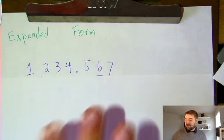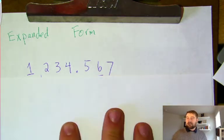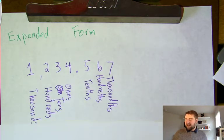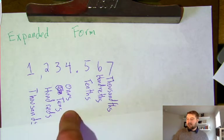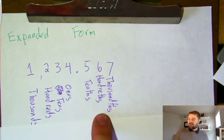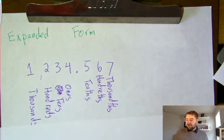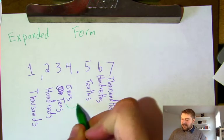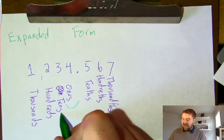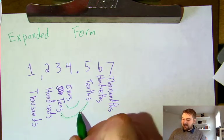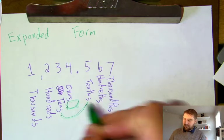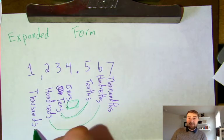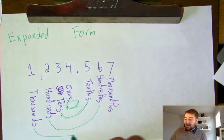This is the same number we used on our notes last week. Going from left to right, we have the thousands, the hundreds, the tens, the ones, our decimal place, the tenths, the hundredths, and the thousandths. We remember that our ones and our decimal places act as a mirror, so everything reflects over that mirror—tens and tenths, hundreds and hundredths, thousands and thousandths.